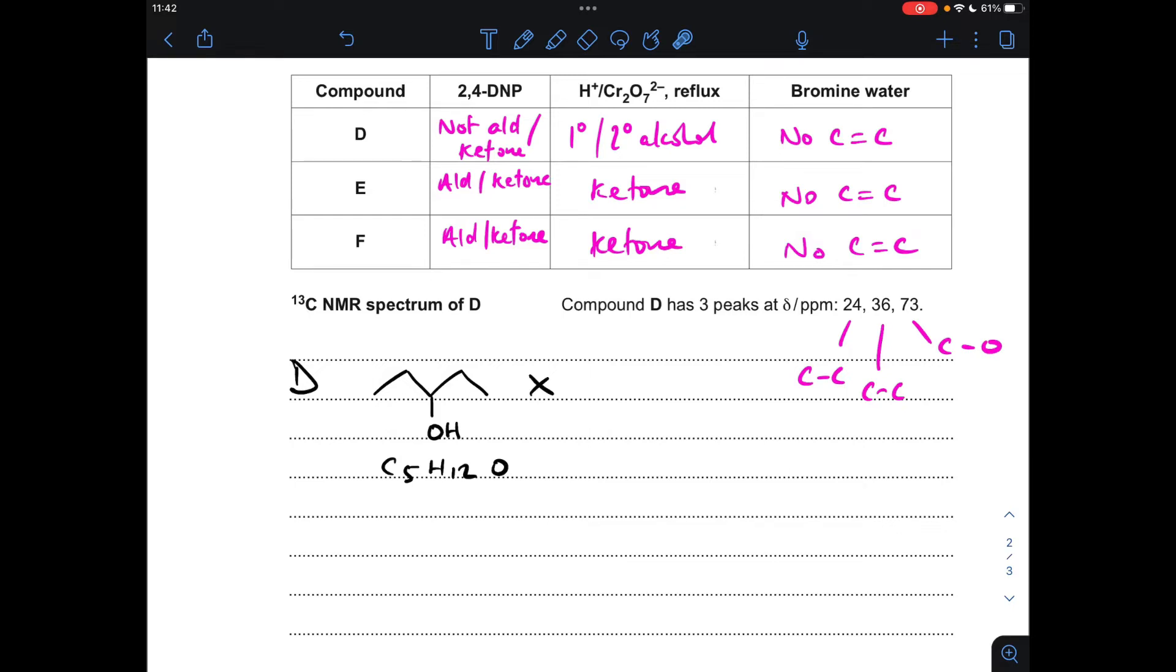So we're going to have to make this a ring. Remember, one of them is alicyclic. So if we went for cyclopentanol, this has got the right molecular formula and it has got the right number of carbon environments. So we've got one there, carbon-to-oxygen, their equivalent, and their equivalent.